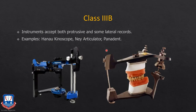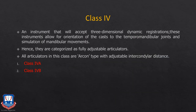Coming to class 3B: examples include Hanau Kinoscope, the Knees articulator, and the Panadent articulator. The key difference between class 3A and 3B is that class 3B also accepts lateral records, whereas class 3A only accepts protrusive records.